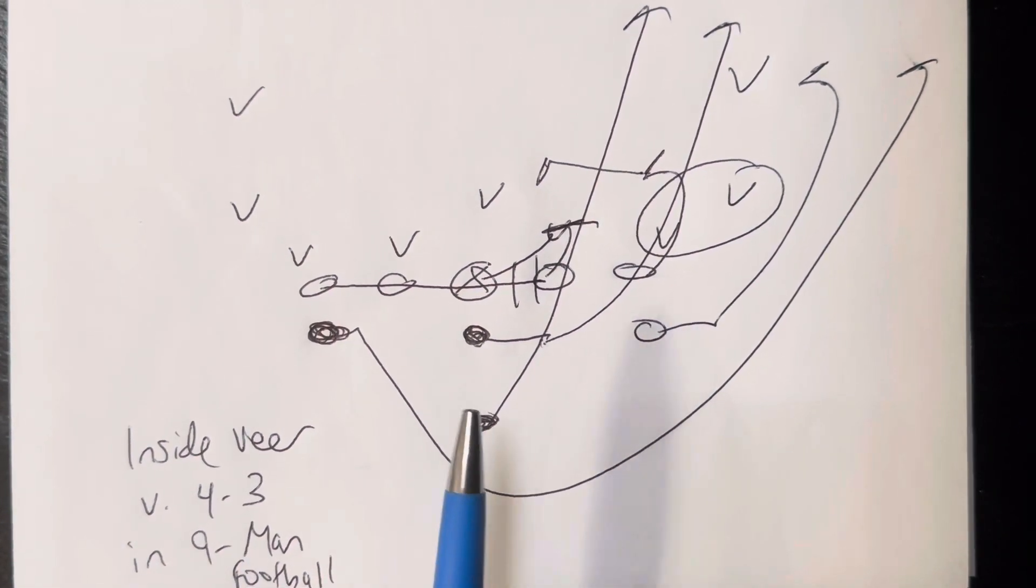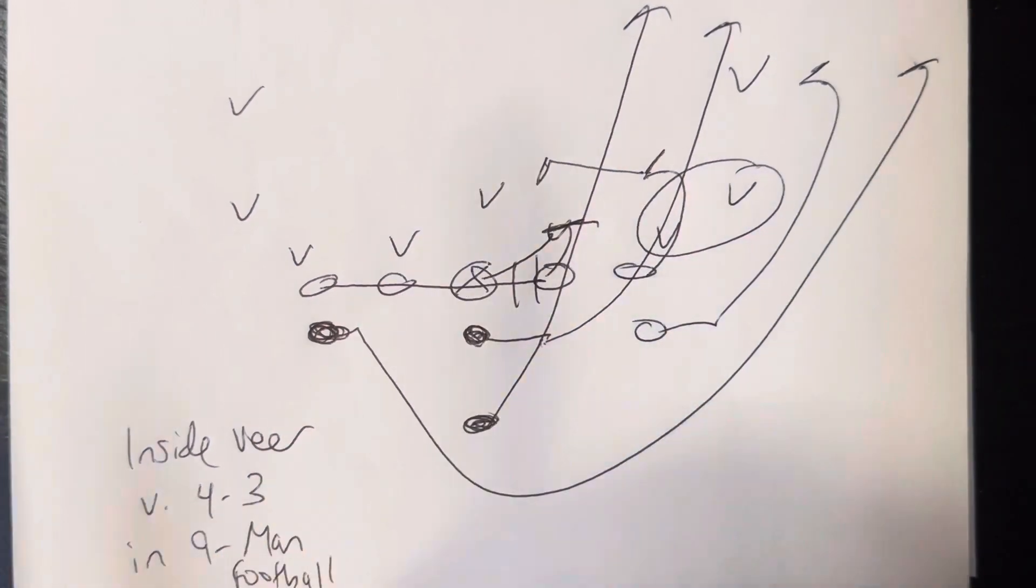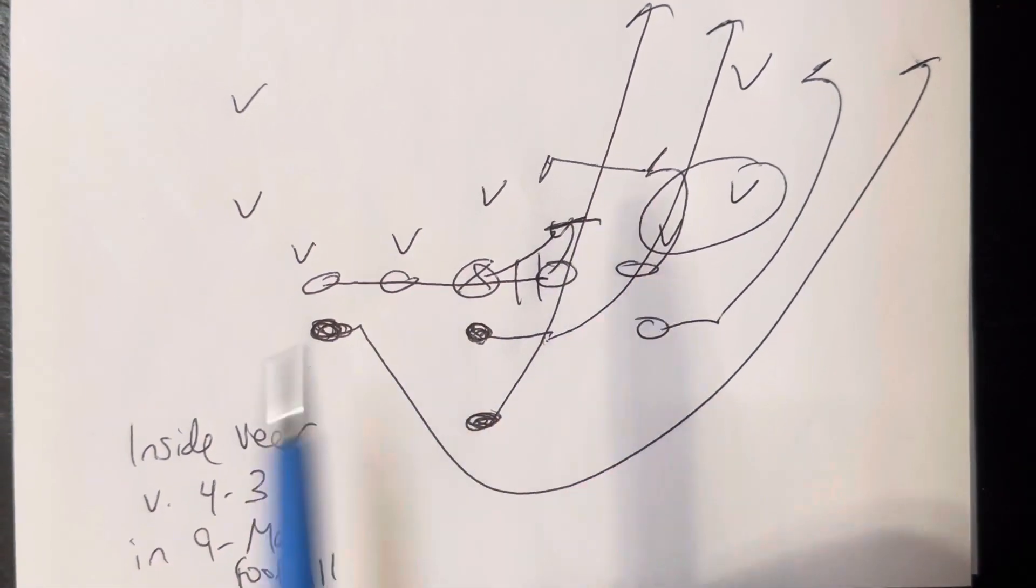Now for the triple option. The quarterback is going to take the snap, jump play side, point the ball. The B-back sprints through the ball, sprints through the play side end of the guard, sprints through the end zone, unless number one cancels the B.